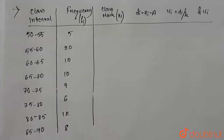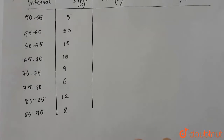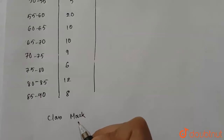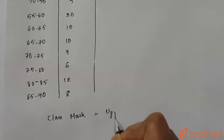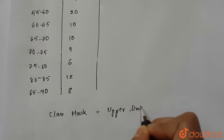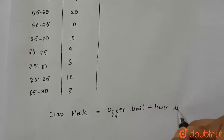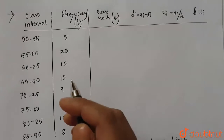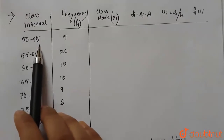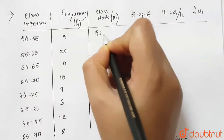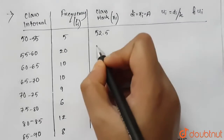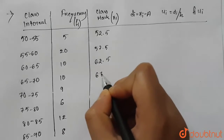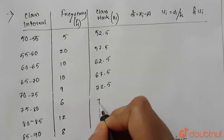For the class mark xi, we use the formula: class mark = (upper limit + lower limit) / 2. So for 50–55, it is (50+55)/2 = 52.5. The remaining class marks are: 57.5, 62.5, 67.5, 72.5, 77.5, 82.5, and 87.5.